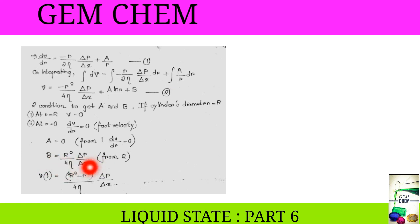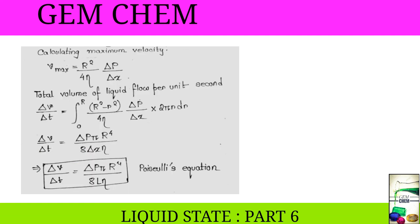Now, the volume at time t comes to be as this one. And for calculating the maximum velocity, we use this. We ignore the small r square. So, total volume of liquid flow per unit second is delta v by delta t, integration of r 0, r square minus small r square by 4 eta delta p delta x into 2 pi r dr. Now, on doing this simplification of integration, we get this equation. And finally, delta v by delta t equals to delta p pi r to the power 4 by 8 L eta. L is the length of the whole tube. And this is our Poiseuille's equation.